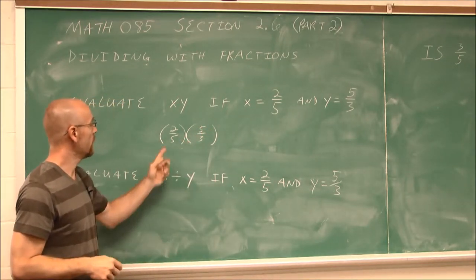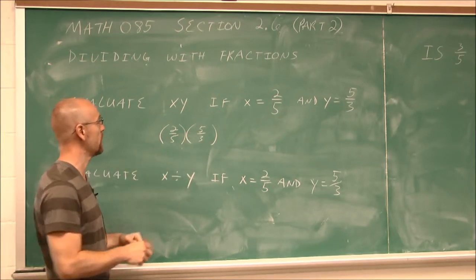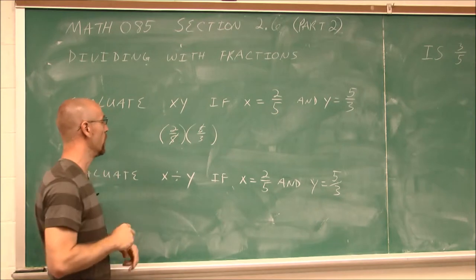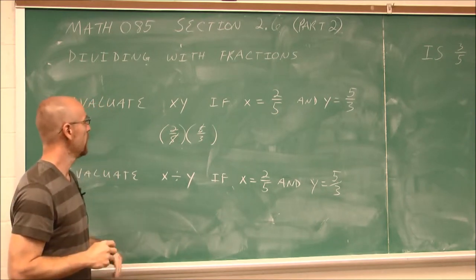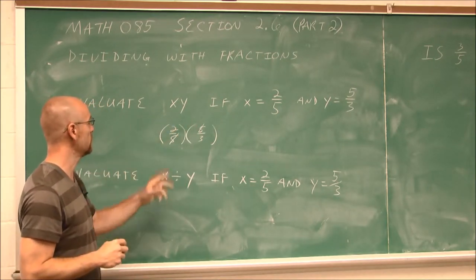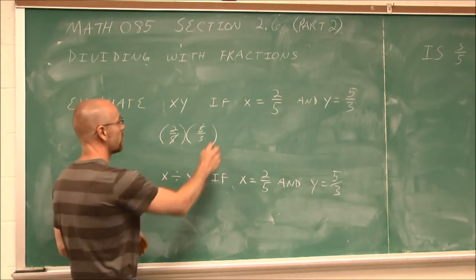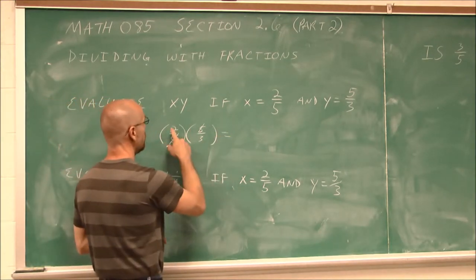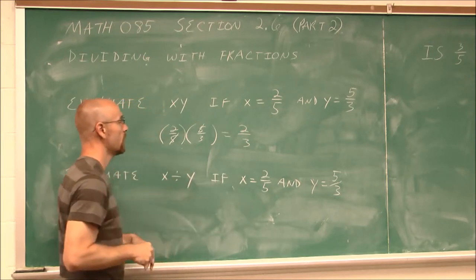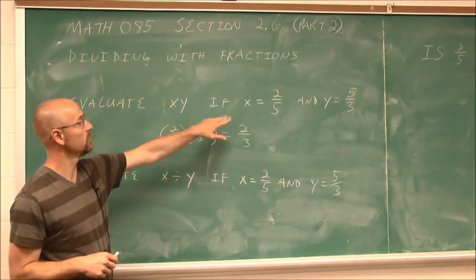I can see I can reduce. There's a 5 on top and a 5 on the bottom, and any number divided by itself is 1. Since that reduces to 1, 1 times 2 is just 2, and 1 times 3 is just 3. So when we multiply across, we get 2 thirds. And that's how we would evaluate using fractions.